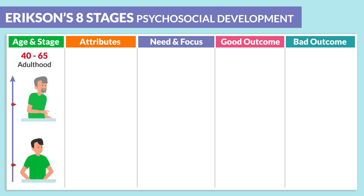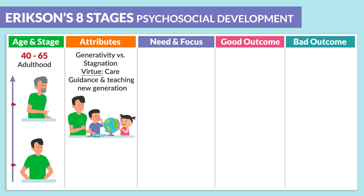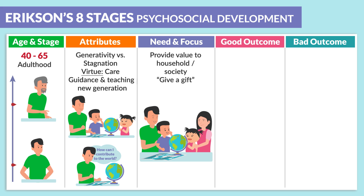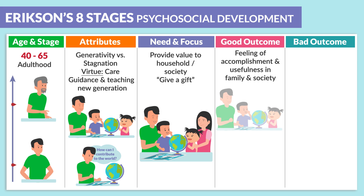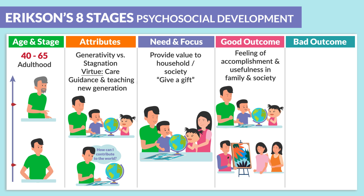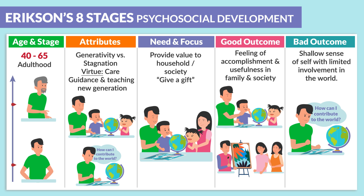The next age group is 40 to 65 — considered full adulthood. The attributes are generativity versus stagnation. Generativity means you're more concerned about other people, be it kids or the next generation. The virtue is care, guidance, and teaching the new generation. This stage is marked by providing value to a household as well as society — often called giving a gift to the next generation. The good outcome is feeling accomplished and useful. The bad outcome is a shallow sense of self with limited involvement in the world.